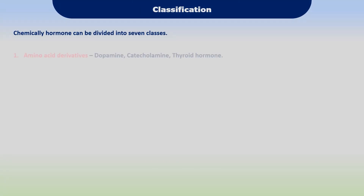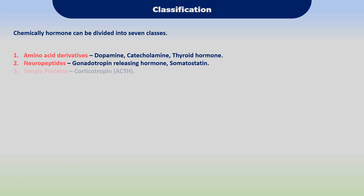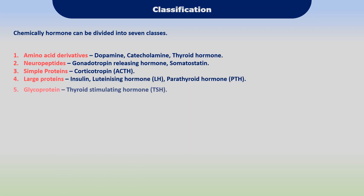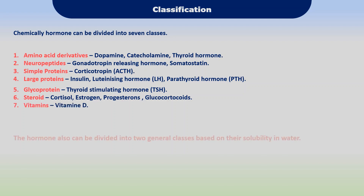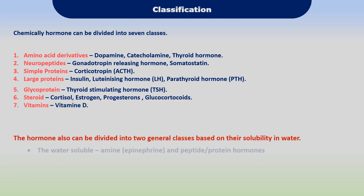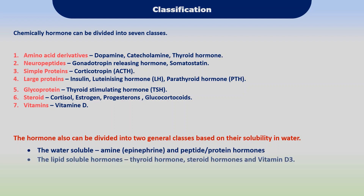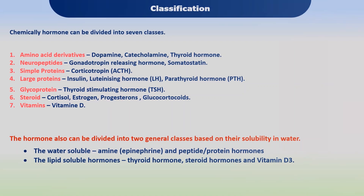Regarding the classification of hormones, hormones can be classified chemically as well as based on their solubility in water. Chemically, hormones are classified into seven classes: amino acid derivatives, neuropeptides, simple proteins, large proteins, glycoproteins, steroids, and vitamins. Water-soluble hormones include amines and peptides, and lipid-soluble hormones include thyroid hormones, steroid hormones, and vitamin D (T3).